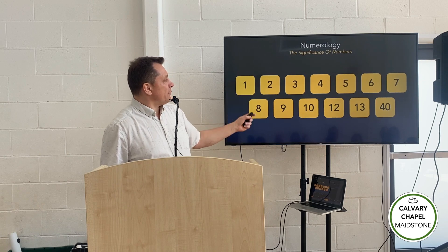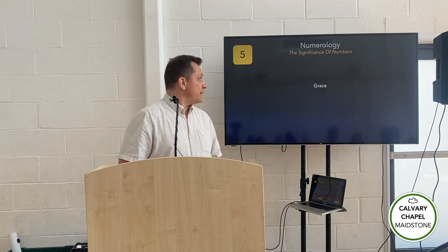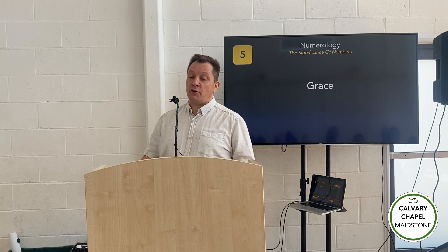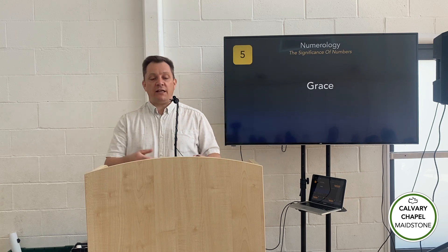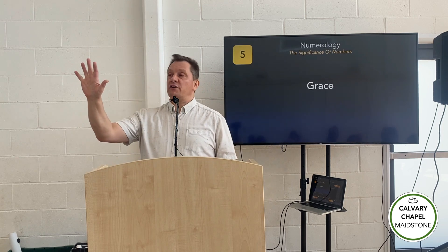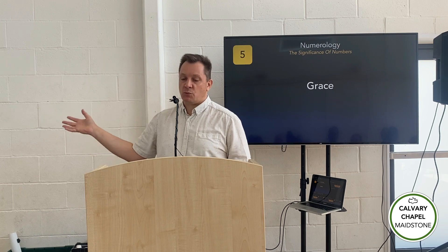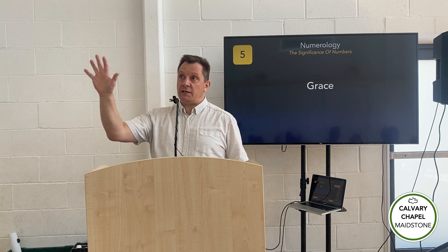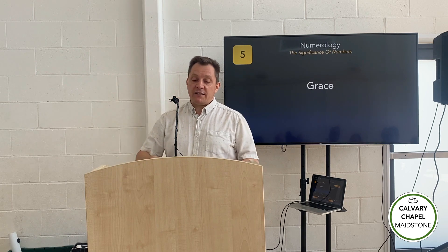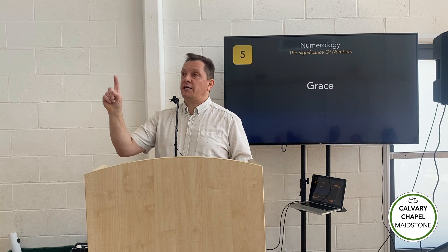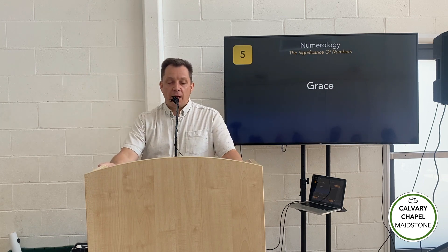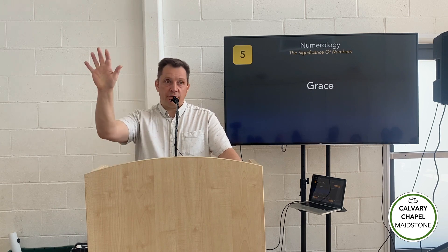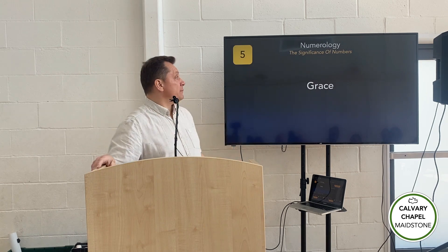Five is the number of grace. God's grace towards Noah was shown in that the ark floated on the water for five months. God's grace to Israel was worked out in five different sacrifices — you can read about those in Leviticus chapters 1 to 5. God's grace to Israel was extended through five covenants he made specifically with them. God's grace to Israel is shown in that five men will chase 100 enemies. And God's grace to the multitude of 5,000 was shown in that they were fed by five loaves. Five is the number of grace.